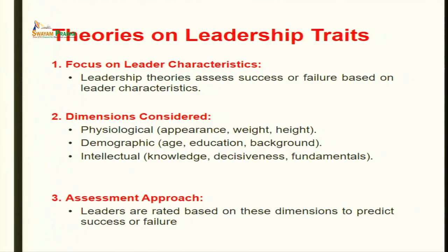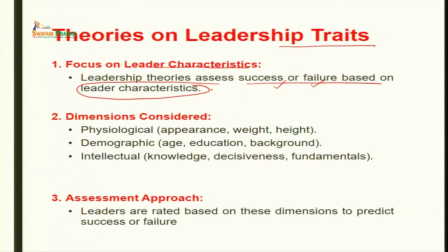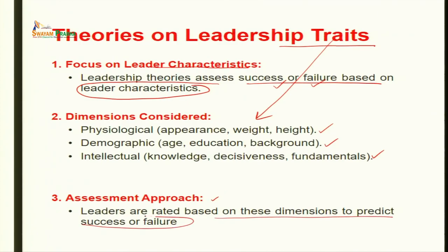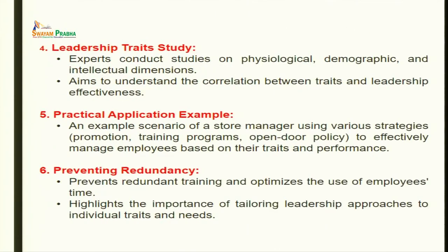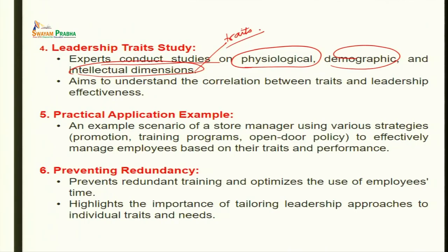The first theory of leadership is the trait theory, which focuses on leader characteristics. Leadership theories assess success and failure based on these leader characteristics. Dimensions considered include physiological dimensions like appearance, height, and weight; demographic dimensions like age, education, and background; and intellectual dimensions. Leaders are rated based on these dimensions to predict success and failure.